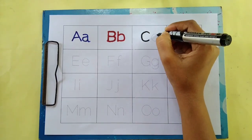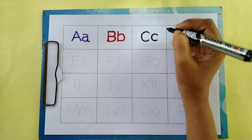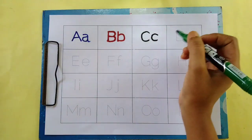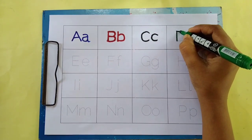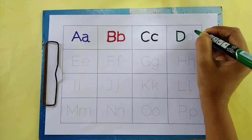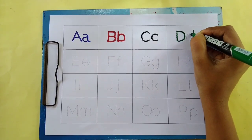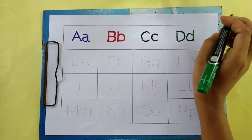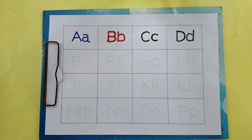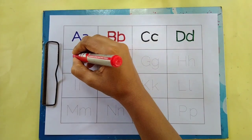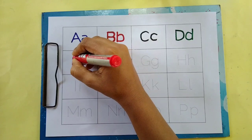C, C for cat, C for cat green color. D, D for dog, D for dog red color.